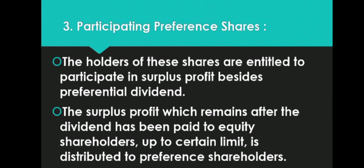Participating preference shares: The holders of these shares are entitled to participate in surplus profit besides the preferential dividend. Agar company ko zyada profit hua hai, toh equity shareholders ko dividend milne ke baad jo surplus bachega, uska kuch hissa participating preference shareholders ko bhi distribute kiya jata hai. The surplus profit remaining after dividend has been paid to equity shareholders up to a certain limit is distributed to these preference shareholders.